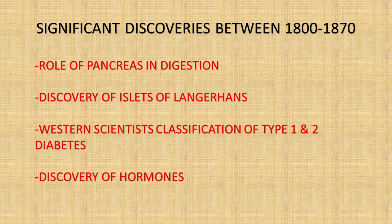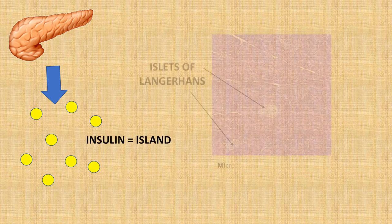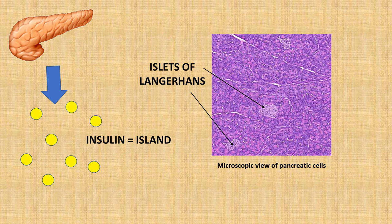The breakthrough in type 1 diabetes therapy came with the gradual understanding of the actual physiology of how diabetes occurs. It began in 1889 after two German doctors removed the pancreas of a dog and then observed that it developed the symptoms of diabetes not long after. By doing this, they proved that the pancreas was producing something that was key to controlling blood sugar. The substance was later called insulin and named after the small islands of cells located in the pancreas that were found to be responsible for secreting it.